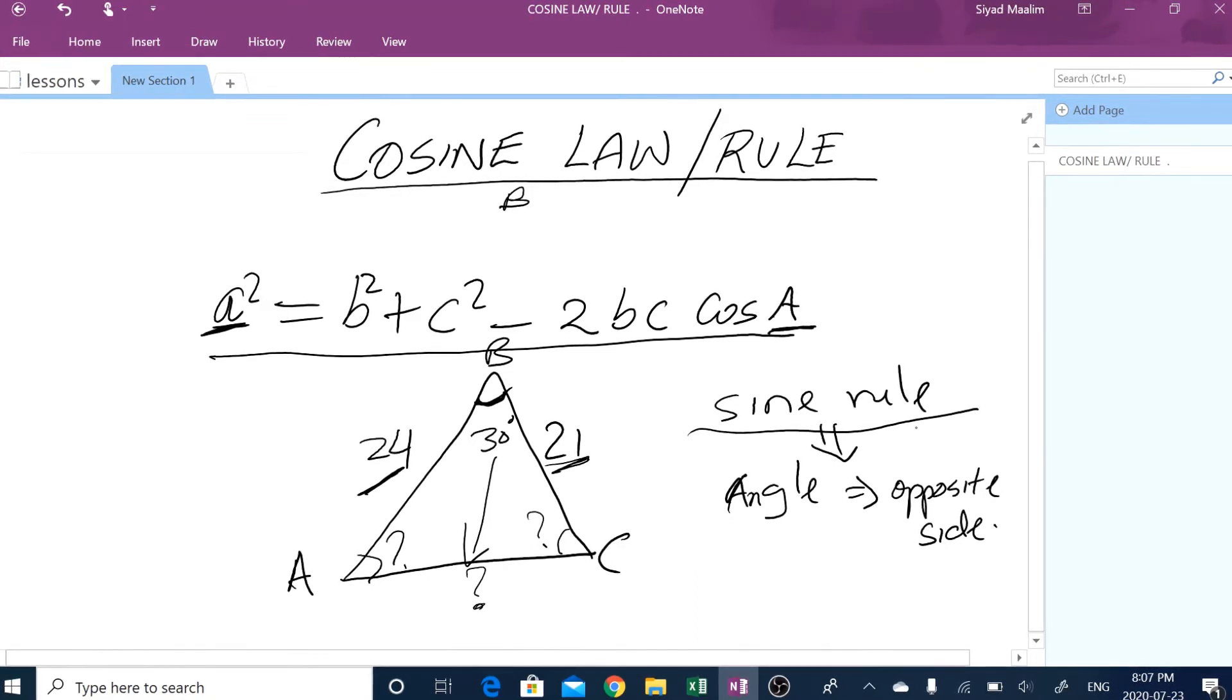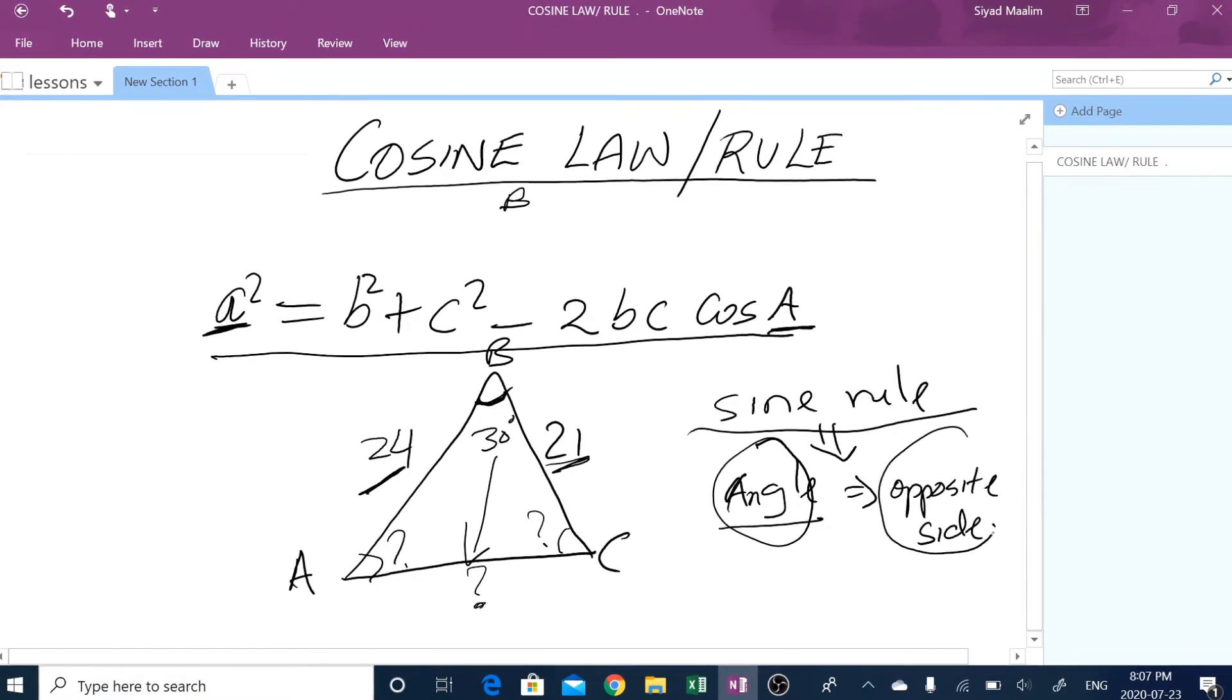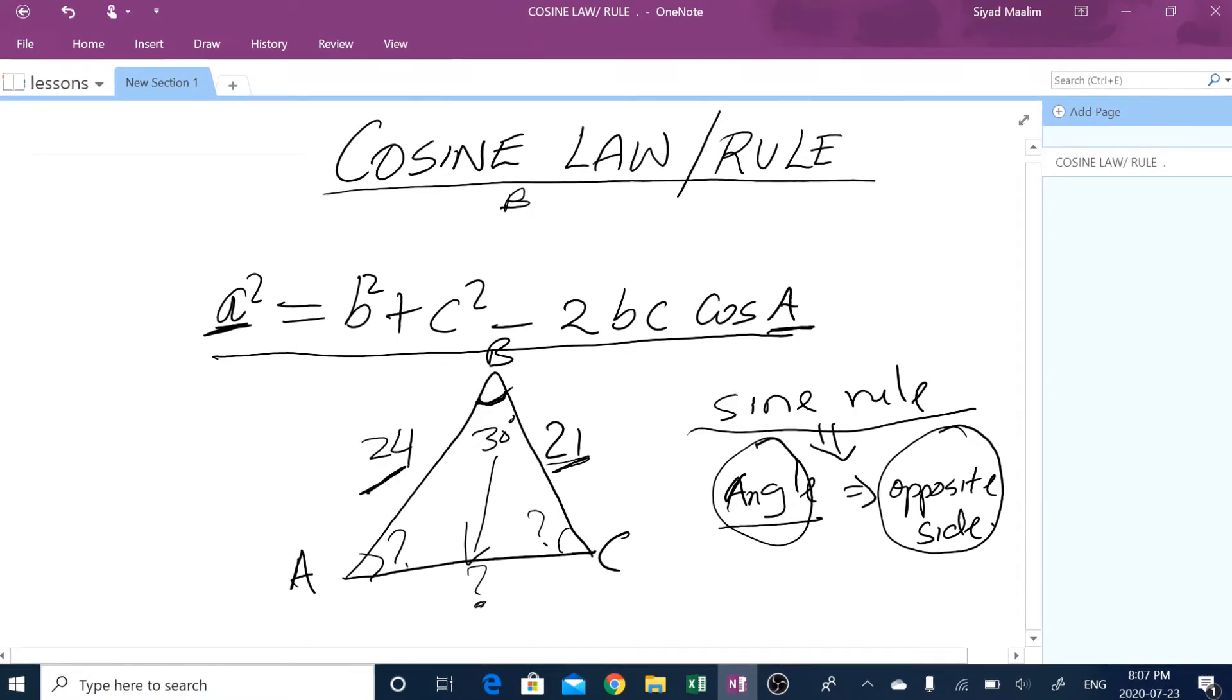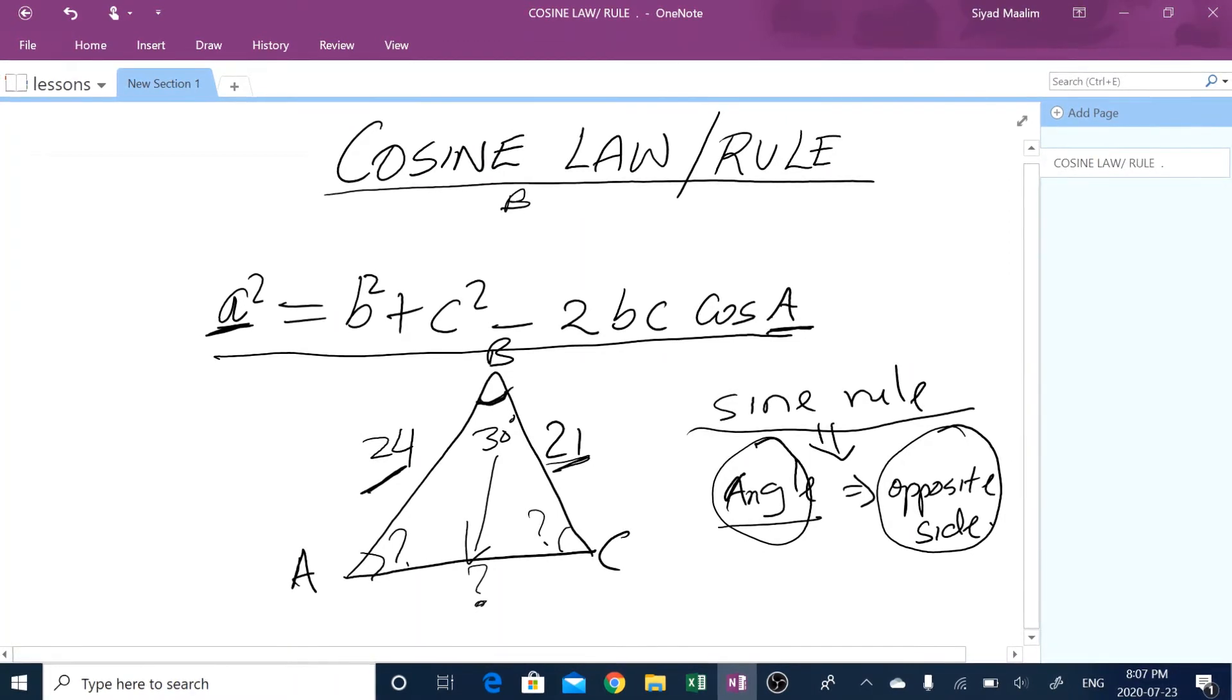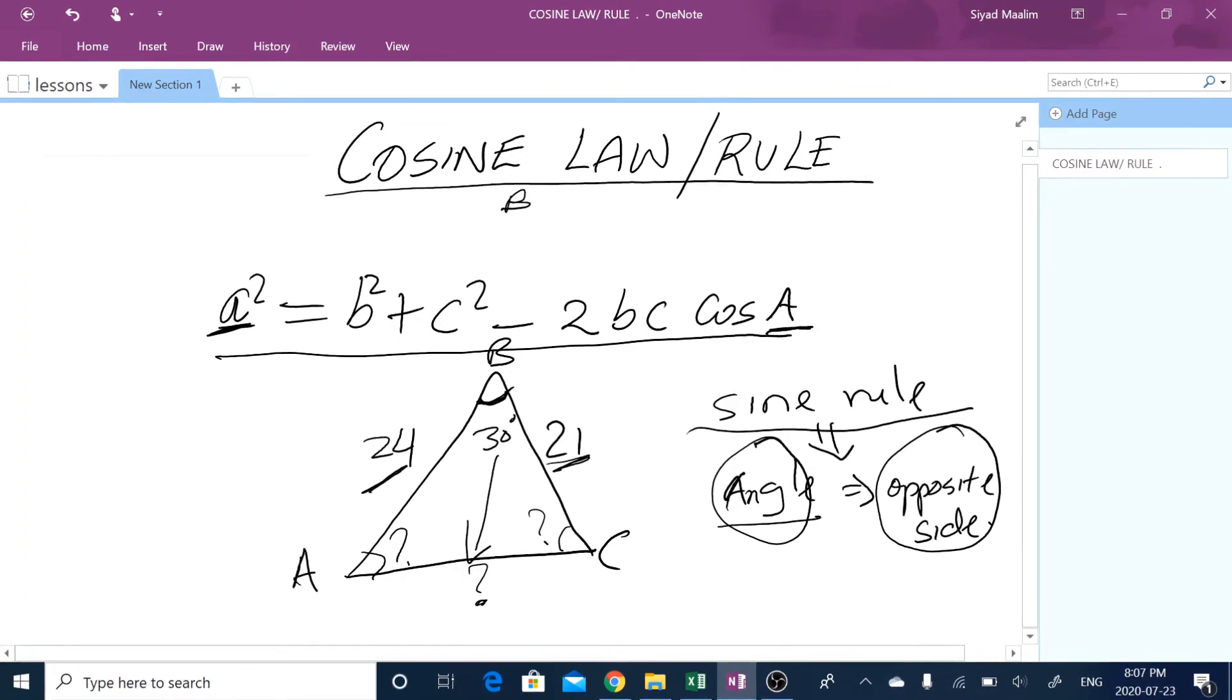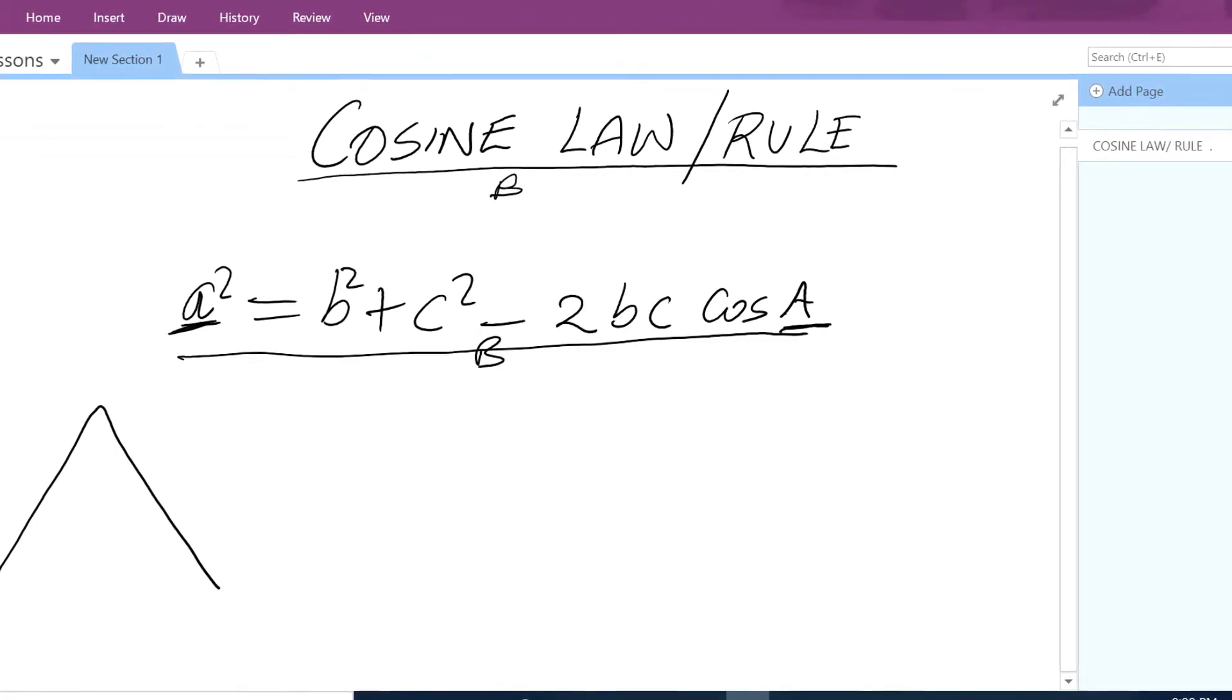You cannot use sine rule because you use sine rule when you have an angle and its opposite side and any other side or any other angle. So it's very important to know when to use cosine rule or when to use sine rule. So in the first instance in my example today, we use cosine rule. So we said we have a triangle